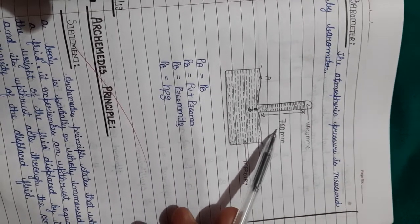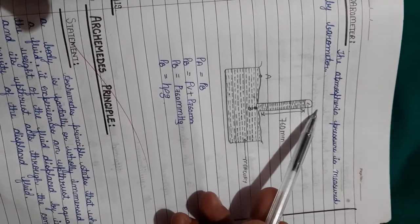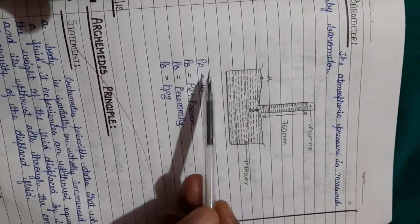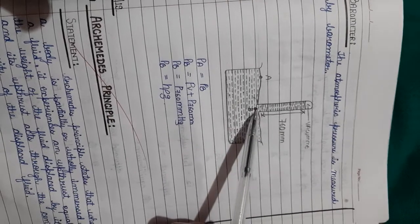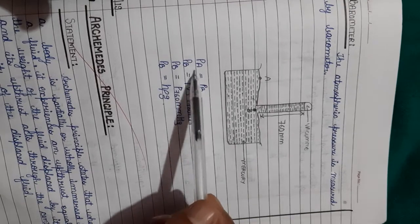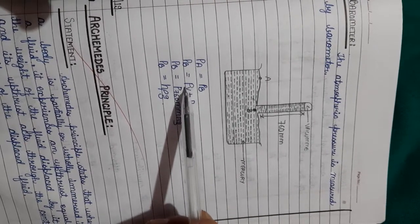At the top, there is a vacuum. There is no atmosphere there. So atmospheric pressure is equal to pressure exerted at point B. At point B, atmospheric pressure is being exerted, so Pb at point B is equal to pressure exerted by vacuum plus mercury column.